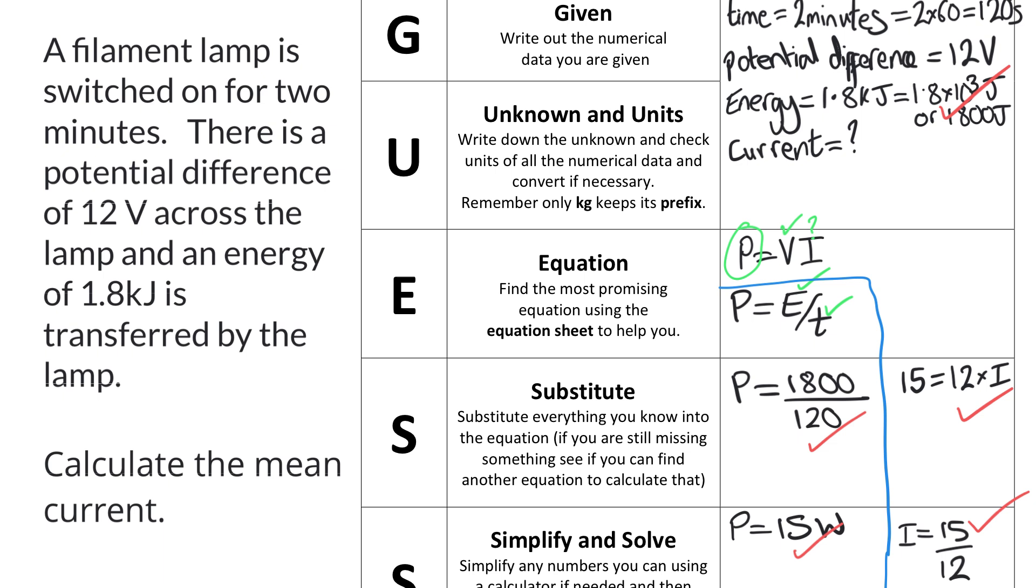And then once I've used that second equation to calculate the power, I can return to my first equation that I thought looked promising to get me the final answer, and substitute in the thing that I now know of power. And I knew the potential difference, so I can find the current. And this method can help you to puzzle through more or less any six mark calculation question.